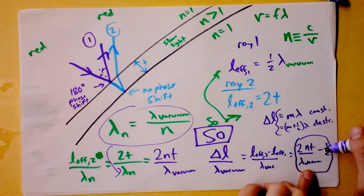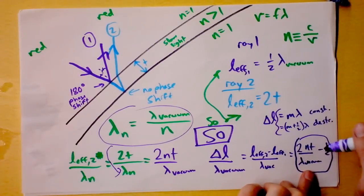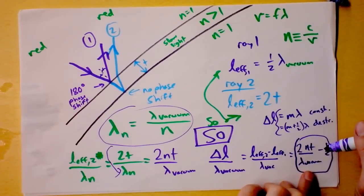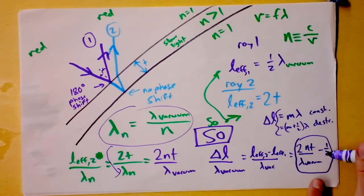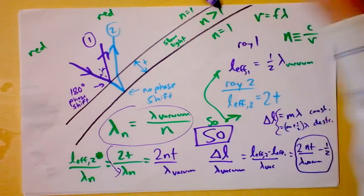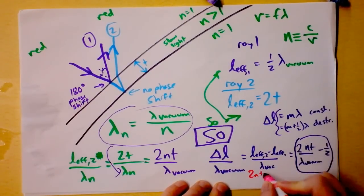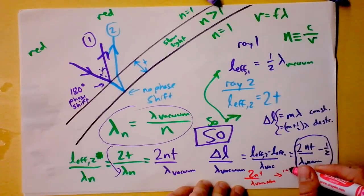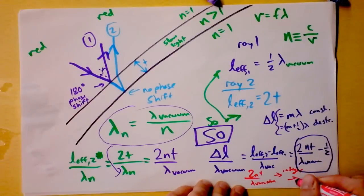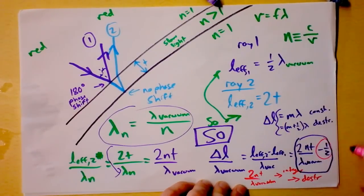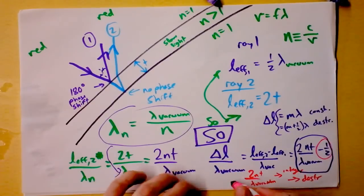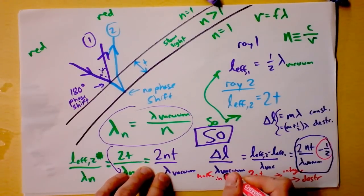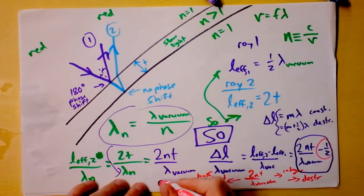My point is, if this equation is an integer, then we've got, wait a second, we've got constructive interference. So if it's a half integer, then we've got destructive interference. Let's simplify that a little bit. Look. If I say two n t over lambda in a vacuum, look at that. Now that's a little bit simpler. If this is an integer, that means destructive, because see that half right there? I'm just taking out that half. And this is a half integer, then we've got ourselves constructive.